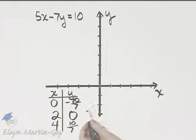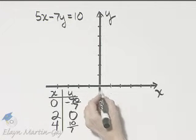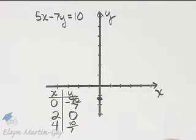Zero, negative 10 sevens. That's negative 1 and 3 sevens. So that's zero left or right, negative 1 and 3 sevens, a little more than negative 1.